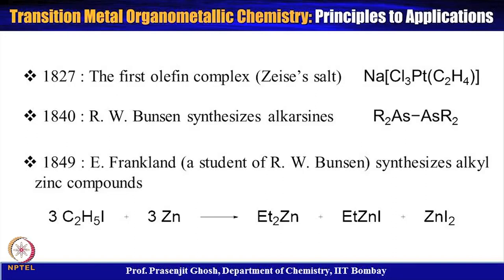Subsequently, around 1827, the first olefin complex called Zeiss's salt, having the formula Na[Cl₃Pt(C₂H₄)], was prepared. This complex is notable because it involves the binding of a gaseous ethylene molecule onto platinum. One important attribute of organometallic chemistry is the ligand-metal interaction — metals interact with ligands in various ways, and this representative compound led to the development of a lot of theory on how a gaseous olefin binds to a metal like platinum.